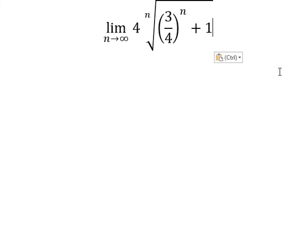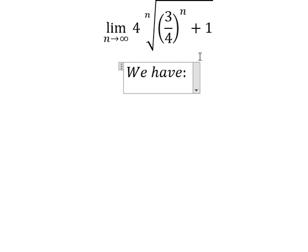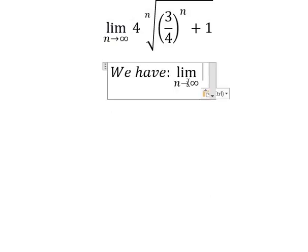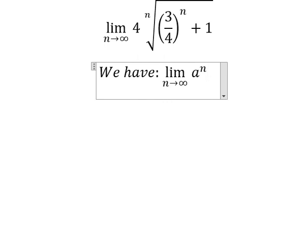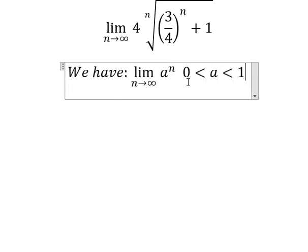Now we have the formula in here. So when a is between 0 and 1, when n goes to positive infinity, this one will go to number 0.